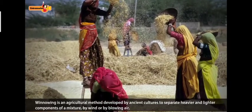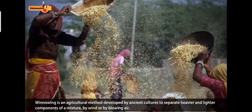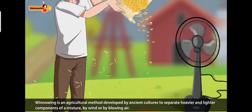Winnowing is an agricultural method developed by ancient cultures to separate heavier and lighter components of a mixture by wind or by blowing air.